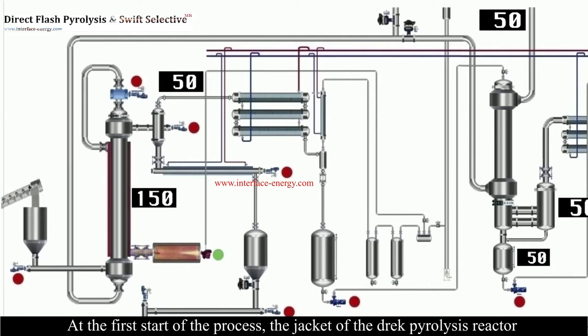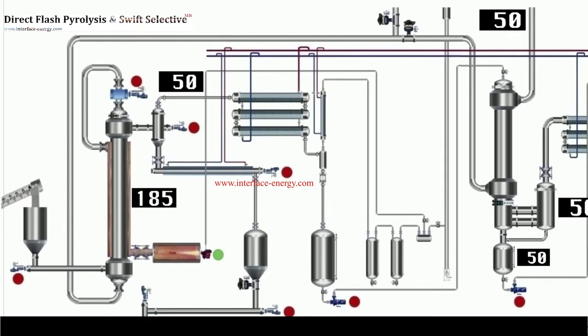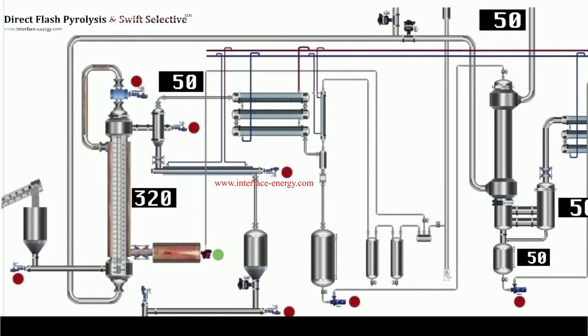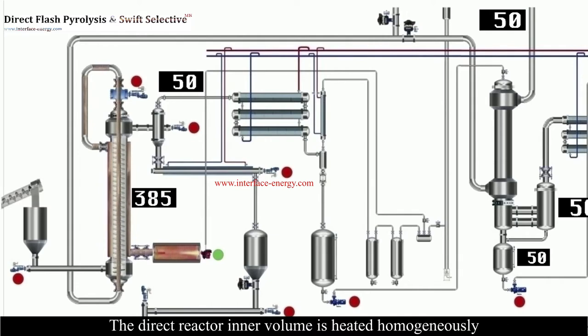At the first start of the process, the jacket of the direct pyrolysis reactor is brought to a sufficient temperature. Special spiral leaves designed for the direct reactor are also contacted with heat. The direct reactor inner volume is heated homogeneously and prepared for the pyrolysis process.